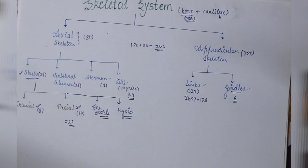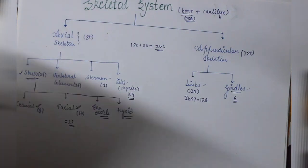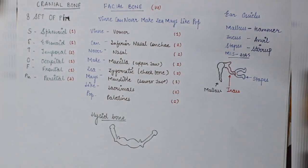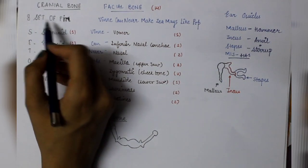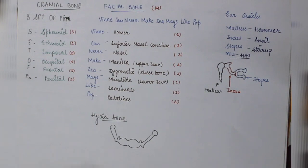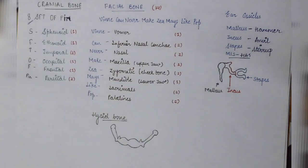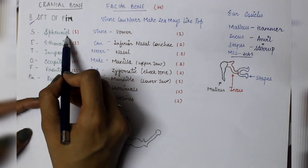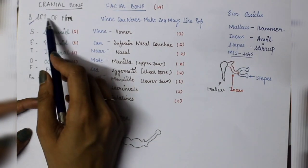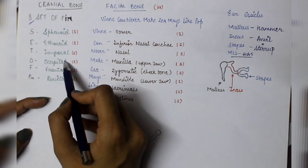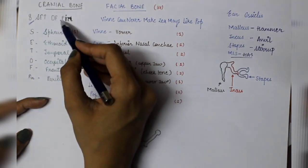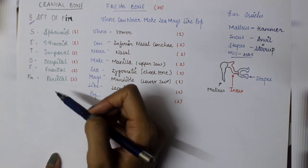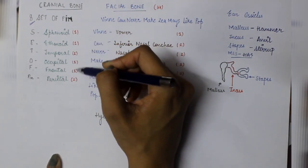So if we look at mnemonic, so that you can remember it. The cranial bone is 8. So what is mnemonic? Eight set of pins. Eight cranial bones. S is sphenoid, E is ethmoid, T is temporal, O is occipital, F is frontal and P is parietal. And how do you remember this? One, one, two, one, one, two.